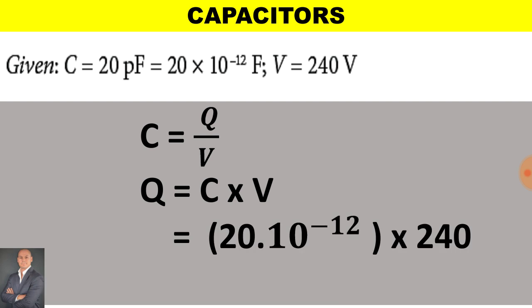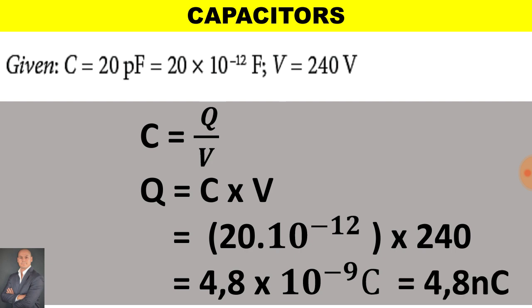The capacitance is 20 times 10 to the minus 12 and the voltage is 240 and we end up with 4.8 times 10 to the minus 9 coulombs which is the same as saying 4.8 nano coulombs.